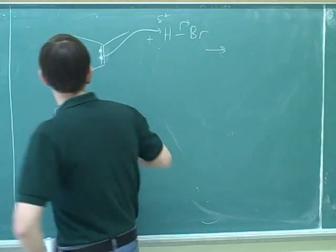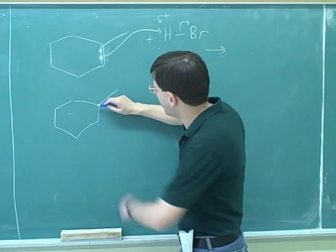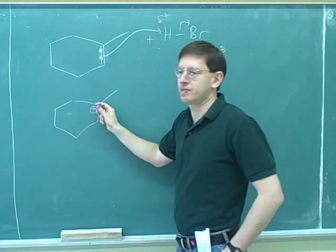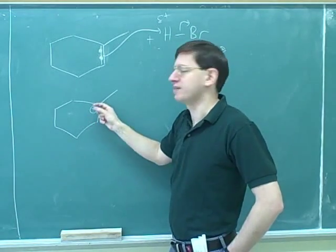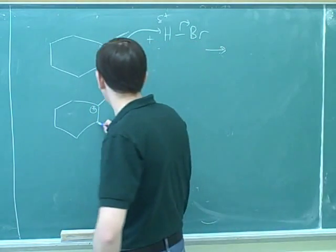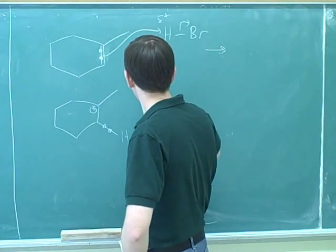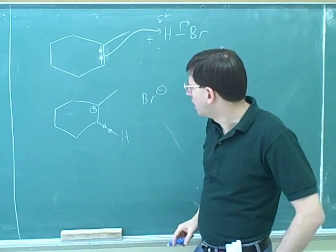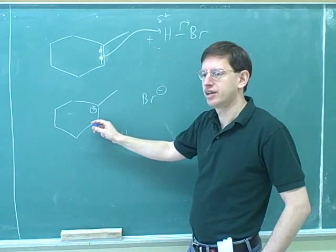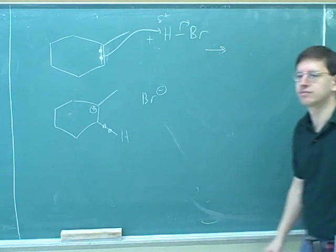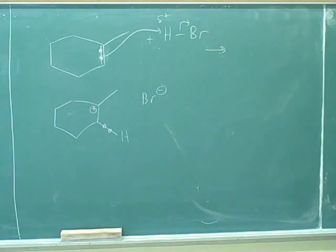Now we need to figure out where the carbocation is going to end up on which of these two carbons. While you were right, it's going to end up over here because this is more substituted. Those carbon chains help to stabilize the carbocation and the hydrogen ended up down here. You don't have to show that if you don't want to. Are we forming a stereocenter here?